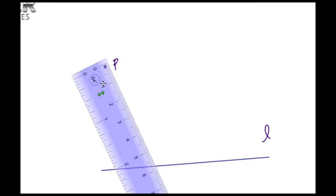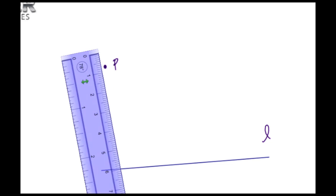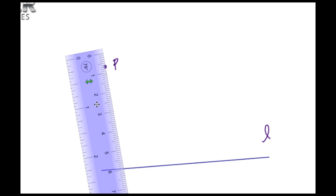...our straight edge, and we're going to create a transversal, which is nothing more than just a line that's going to intersect this point P and also go through line L. So let's construct that.